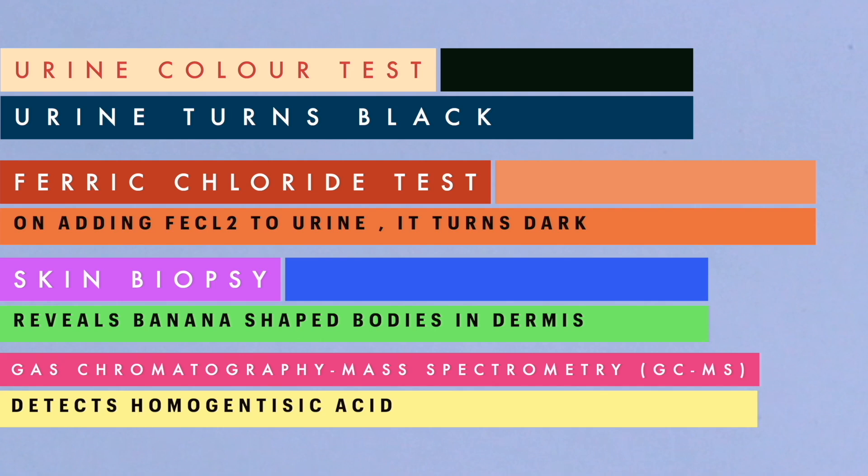The fourth diagnostic test is gas chromatography-mass spectrometry (GC-MS) analysis, which is the gold standard for alkaptonuria by detecting the amount of homogentisic acid in a 24-hour urine sample. The last test is DNA testing to check for the mutated HGD gene.